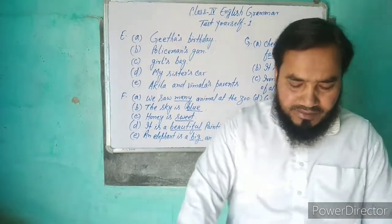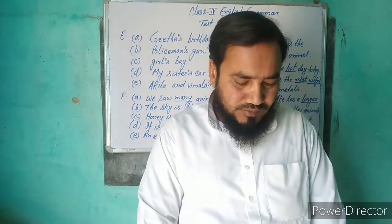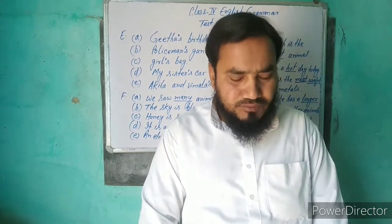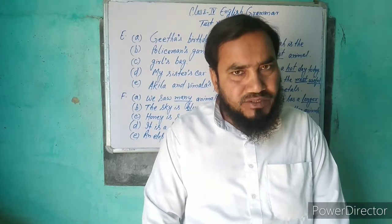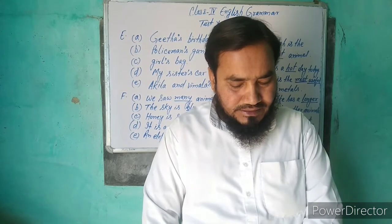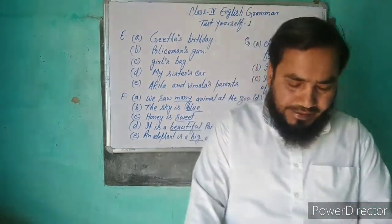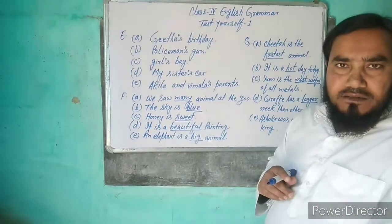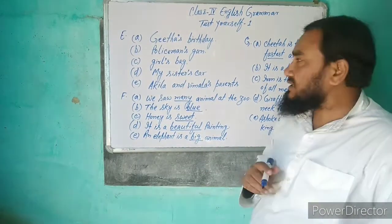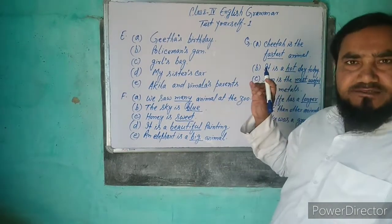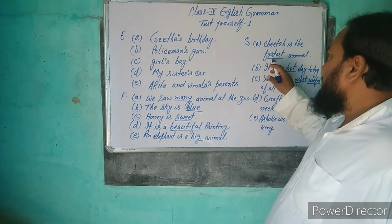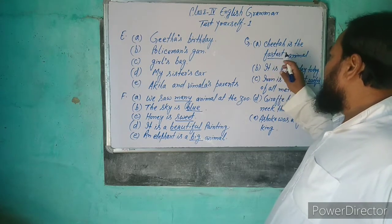اس کے بعد G دیکھیں: Fill in the blanks with the correct word from the box۔ Box میں words دیئے ہوئے ہیں: most useful, longer, fastest, great, hot۔ A ہے: Cheetah is the ___۔ Box میں fastest ہے اور چیتہ سب سے تیز ہوتا ہے، تو fastest ہوگا۔ Cheetah is the fastest animal۔